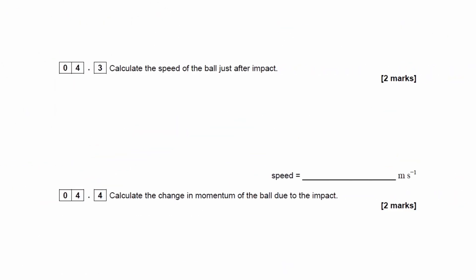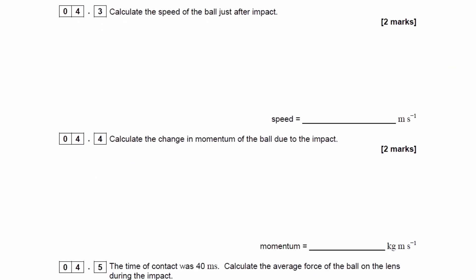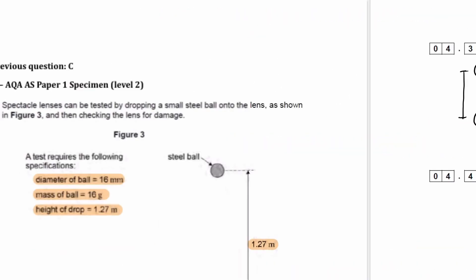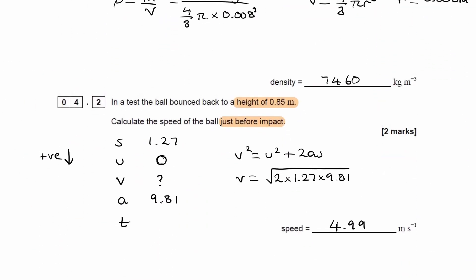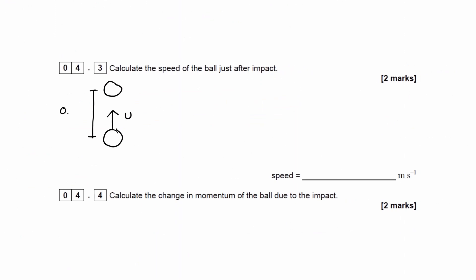Right, for 4.3, we want to work out the speed of the ball just after impact. So now we're considering the ball has just collided with the lens. It's now going to be traveling up after the collision with a certain speed that I'll call u. It then rises up to a height. The height that it rises up to would be, we're told from earlier, is 0.85. So this will be 0.85 meters.